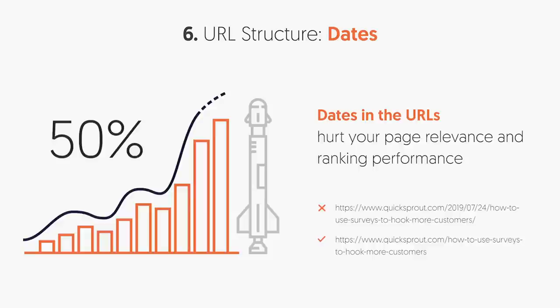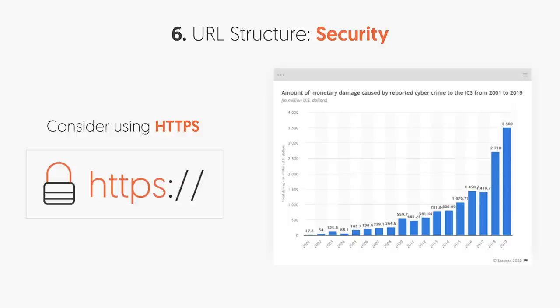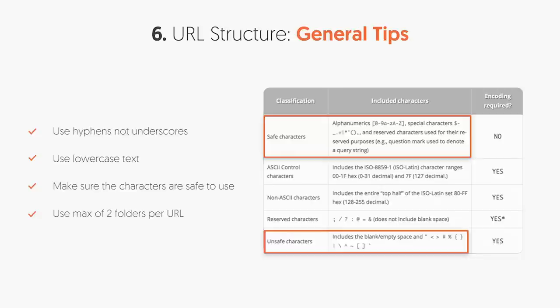You'll also want to use an SSL certificate. Most pages that rank on Google use one — it changes your URL from HTTP to HTTPS. Without it, your site may show 'not secure' in the browser. It helps with rankings and also with conversions. Some general URL tips: use hyphens, not underscores; use lowercase text; use safe characters — no ampersands, pound signs, or squiggly marks; only letters, numbers, and dashes. Try to keep your URLs to a max of two folders, meaning no more than two slashes after the domain.